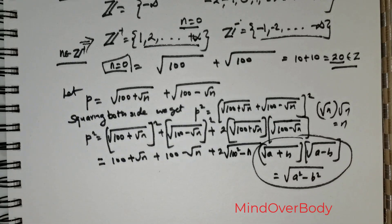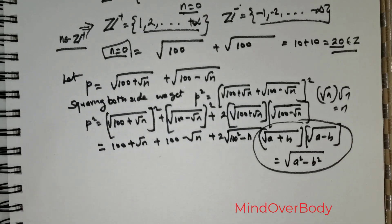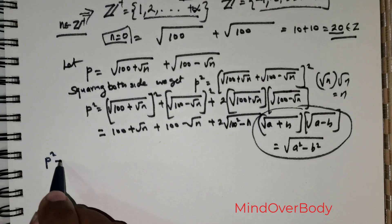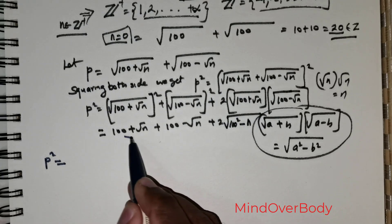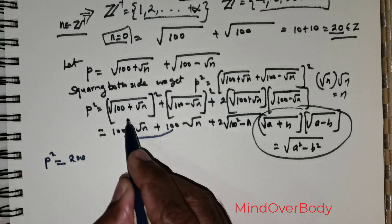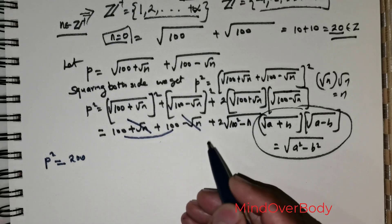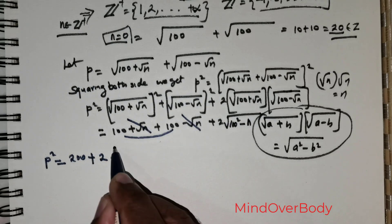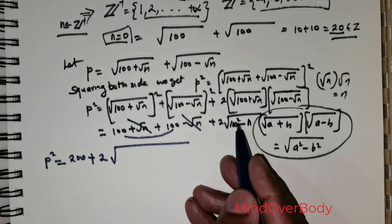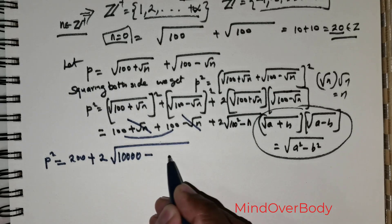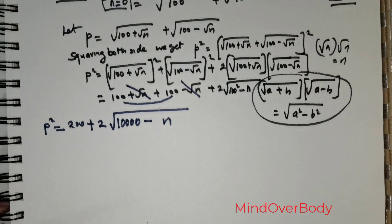Since √n · √n equals n, we get: p squared equals 200 plus 2 times the square root of (10000 minus n). This is the simplified form of the equation.